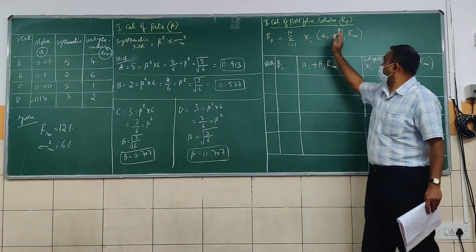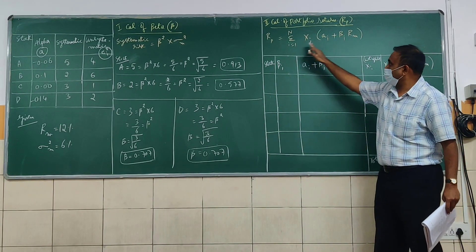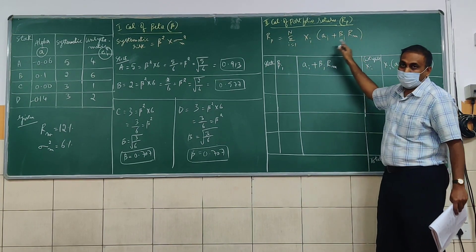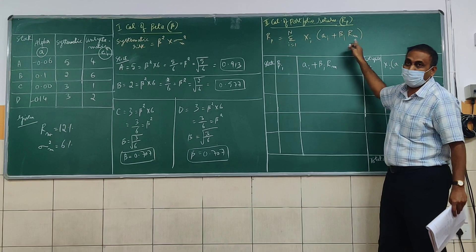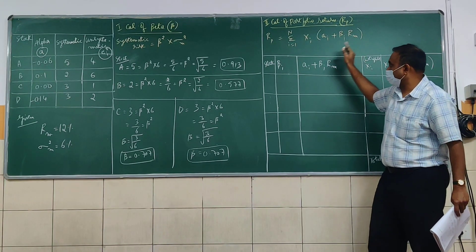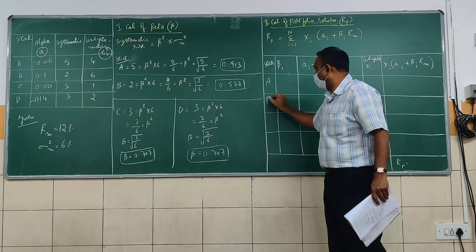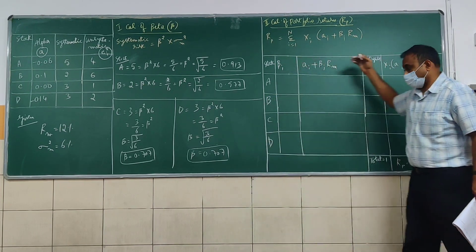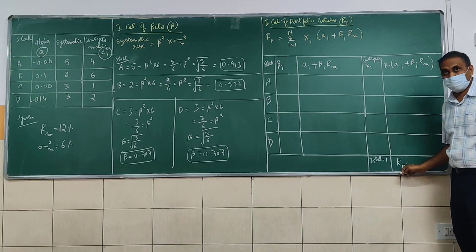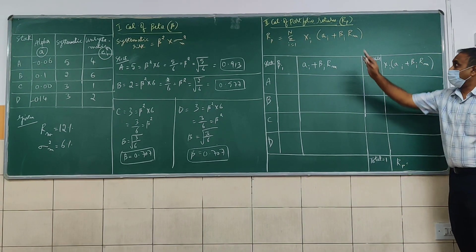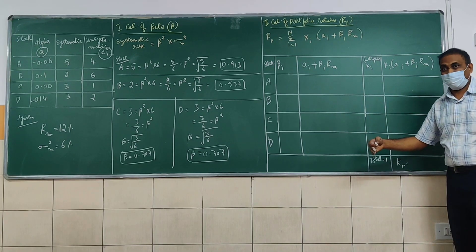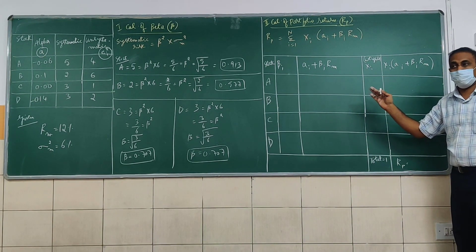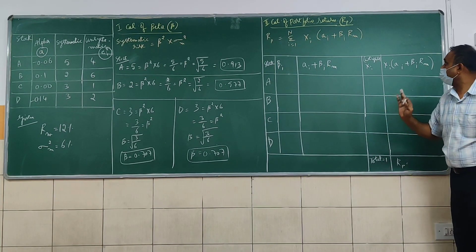Now coming to the calculation of portfolio return. The formula is: summation of Xi into (alpha + beta × market return), for stocks A, B, C, and D. Instead of substituting row by row, I will find the value column by column to make the work easier.